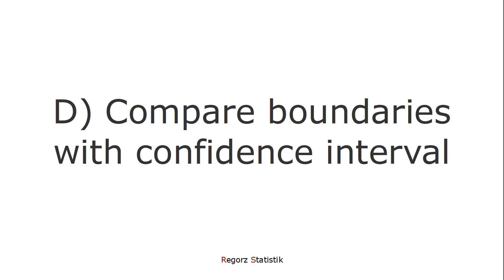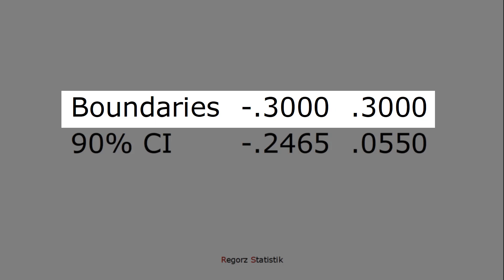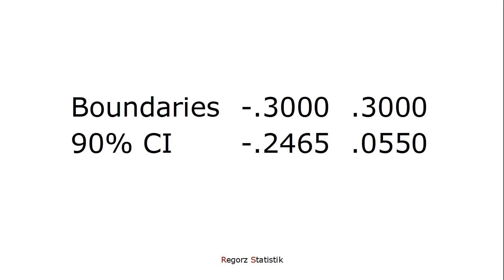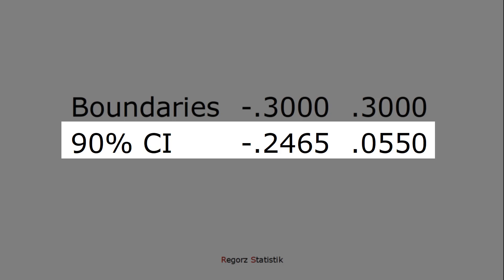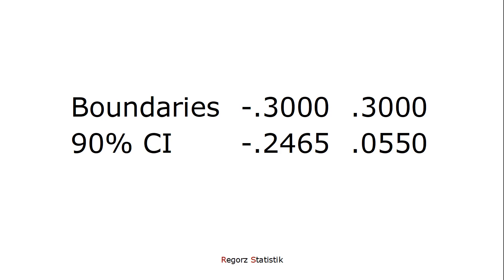The only thing that remains to be done is comparing our pre-specified boundaries with this confidence interval. My boundaries were minus 0.3 and plus 0.3. And here is the resulting confidence interval for our data. And here we see the confidence interval lies completely within those boundaries.